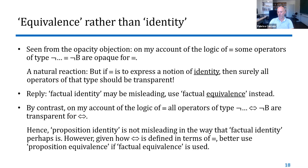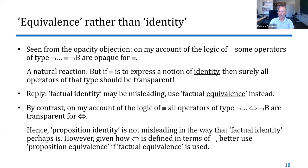By contrast, on my account of the double arrow operator, all operators of type 'not blah ⇔ not B' are transparent for the double arrow operator — so you don't have opacity here. As a consequence, the label propositional identity is not misleading in the way that factual identity perhaps is. Given how the double arrow is defined in terms of triple bar, if you use factual equivalence for the latter, then it's better to use propositional equivalence for the former. These are questions of terminology, which are not really very important, but if using one piece of terminology leads people into wrong objections, then it's better to change the terminology.